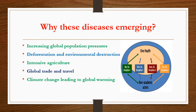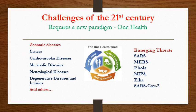Why are these diseases emerging? It is mainly due to increasing global population pressures, deforestation and environmental destruction mainly for agricultural purposes or animal farming, intensive agriculture, global trade and travel, and climate change leading to global warming — all affecting the health of animals and humans and the emergence of different kinds of pathogens. Now in the 21st century, this is a new challenge requiring a new paradigm shift: the understanding and application of One Health.